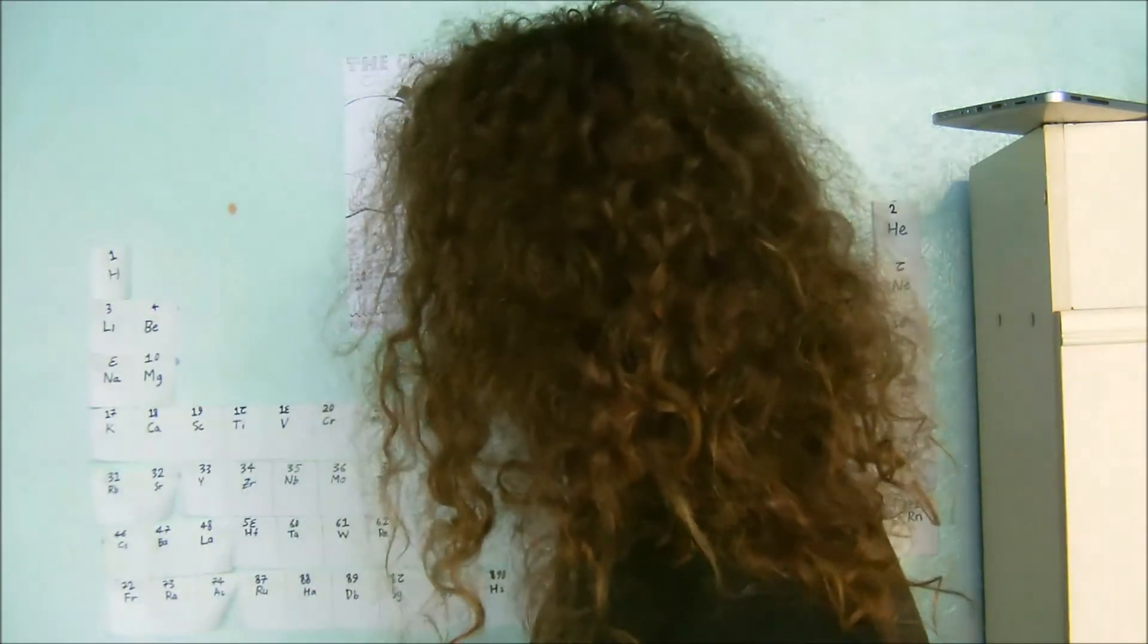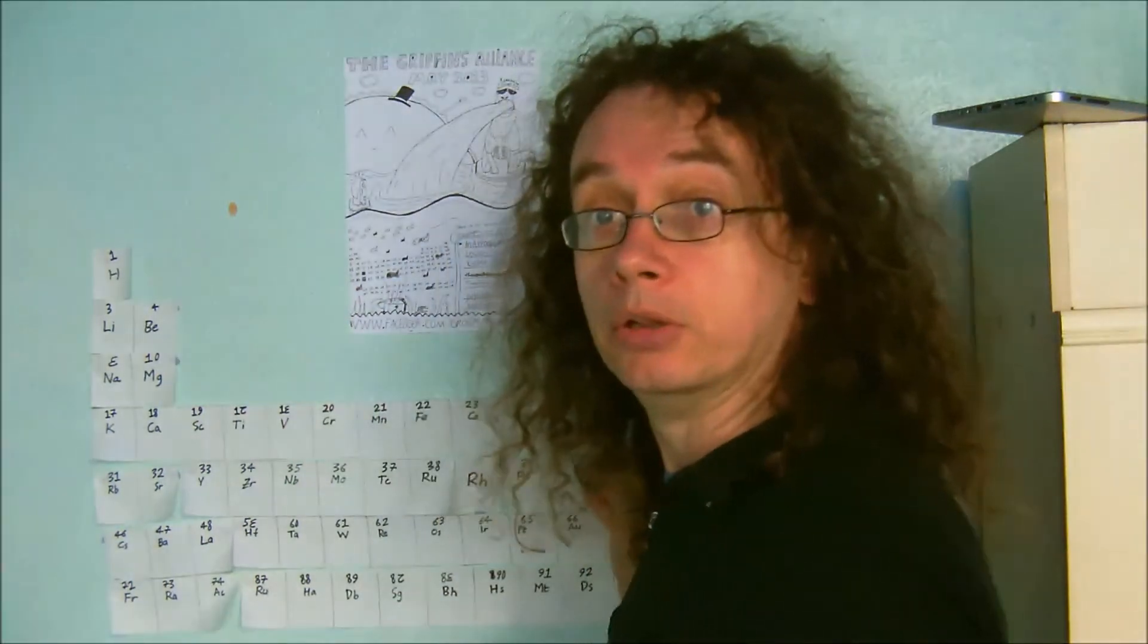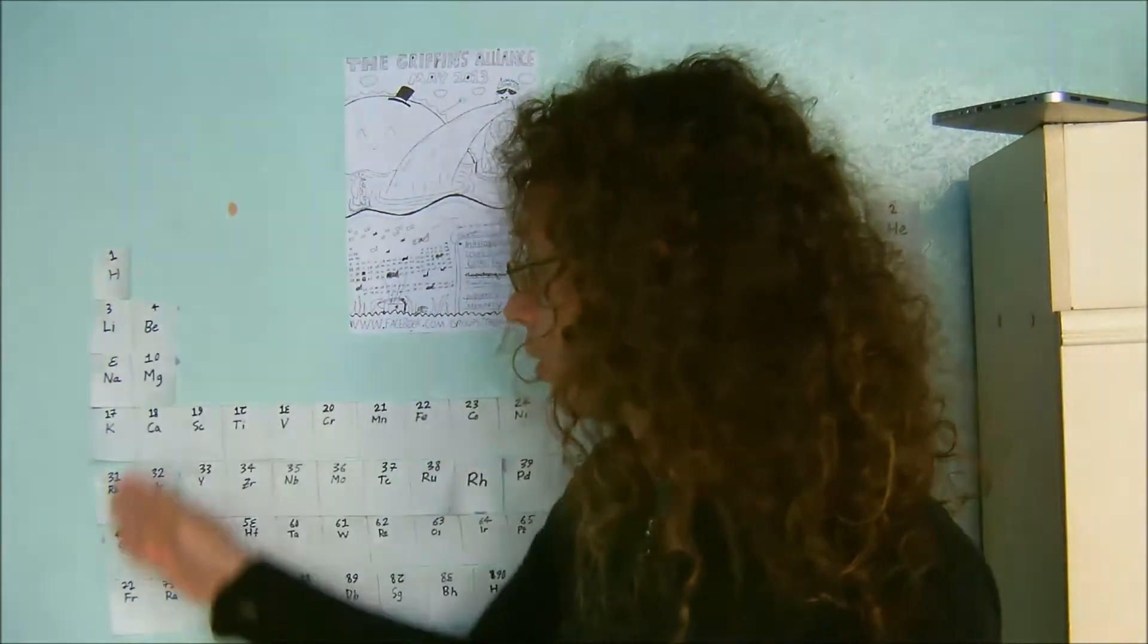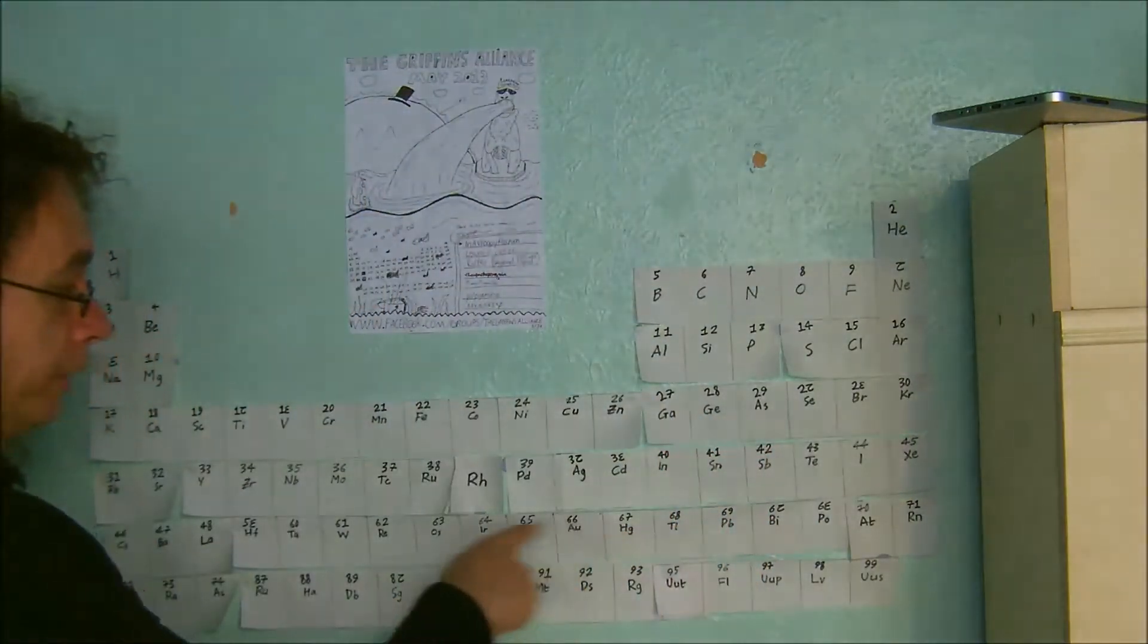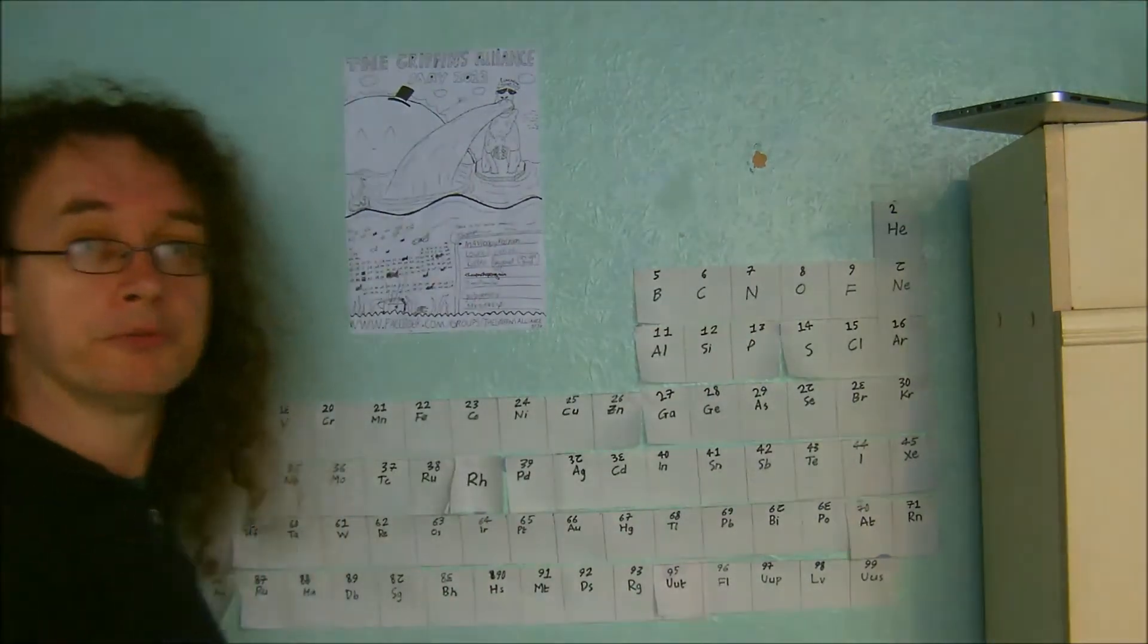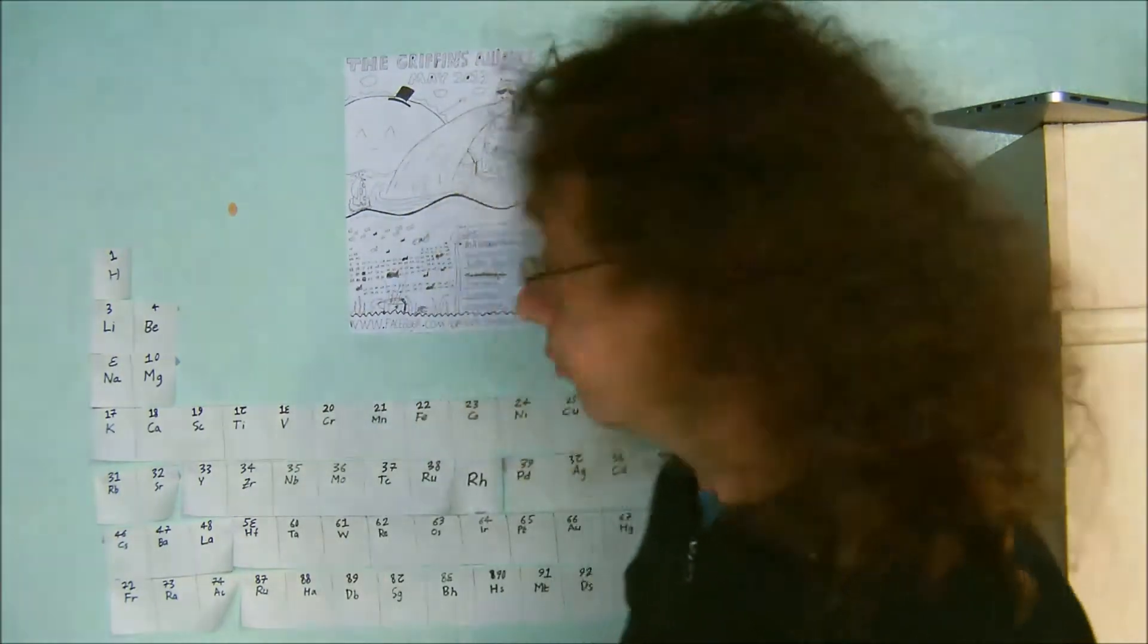Next lot along are the transition metals mainly, which are this block in the middle. Those on the whole are sort of intermediate in reactivity between the alkali metals and the alkali earths and the other noble metals, which are sort of down here, which are obviously still transition metals. They're often found in combination naturally with sulfur or with oxygen.